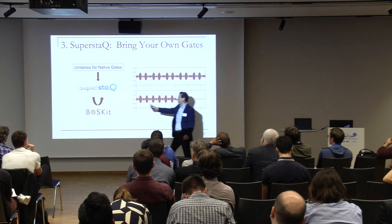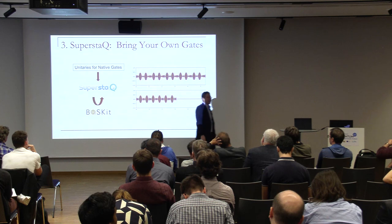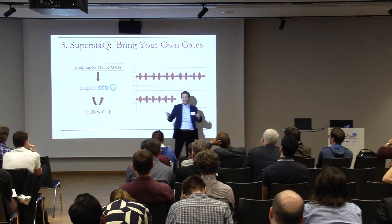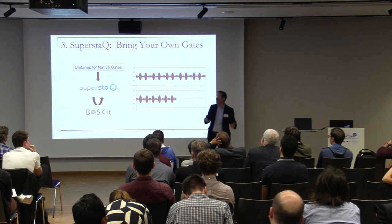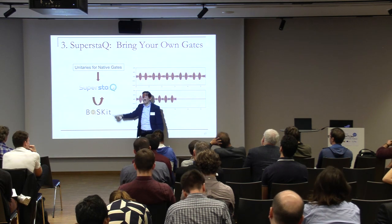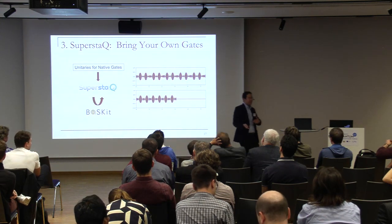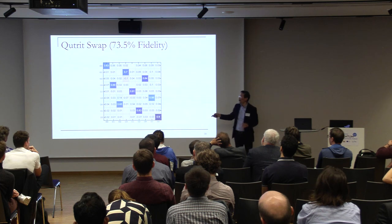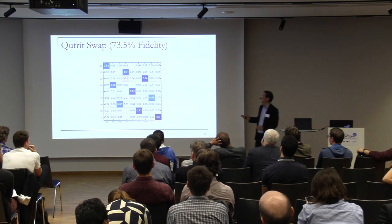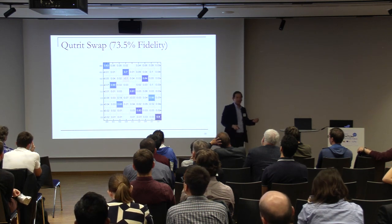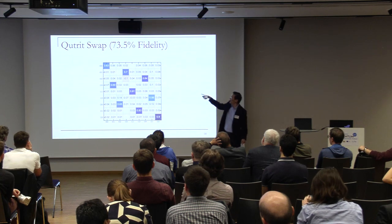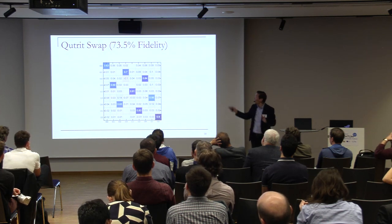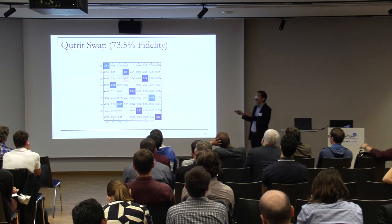Access to timing control is very important. Here's another capability in the SuperStack software that uses the Berkeley BISCUIT tool — which someone will talk about tomorrow. This automatically takes any machine's native gates, specifies their unitaries, feeds them into SuperStack, which calls BISCUIT to resynthesize your unitaries into those native unitaries, giving us the ability to automatically target your machine. One adventurous thing: the Berkeley AQT machine supports qutrit operators, and we ran those through our compiler and synthesized the qutrit SWAP — it's not the highest fidelity, but it works.